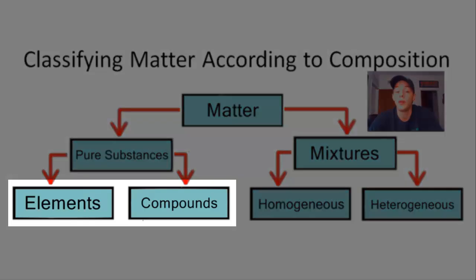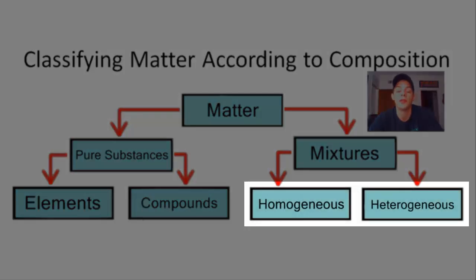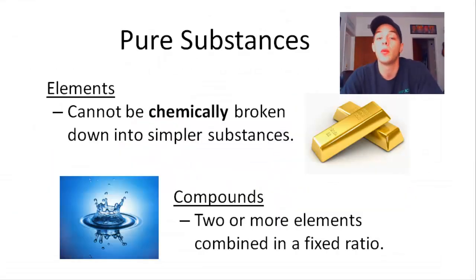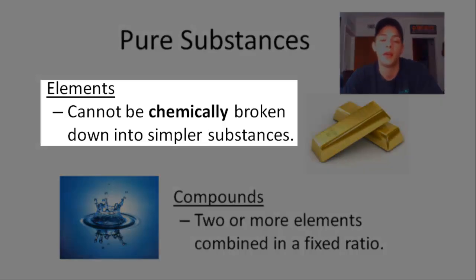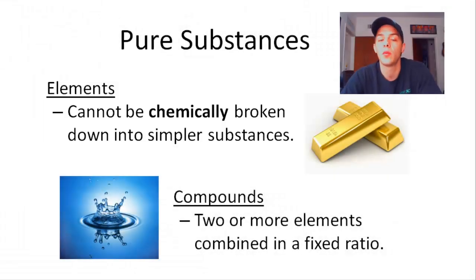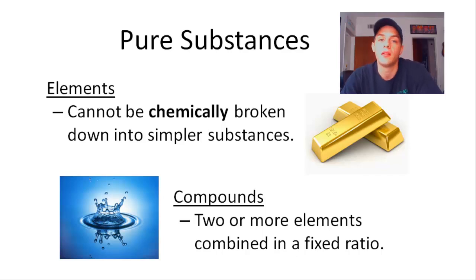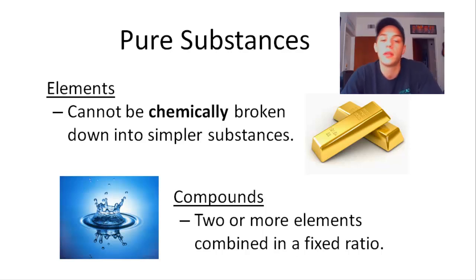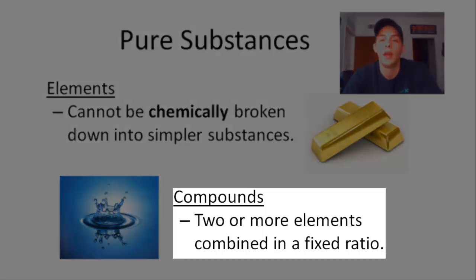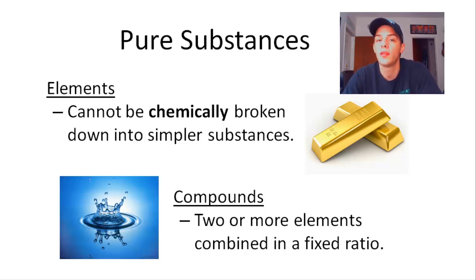Within pure substances we have elements and compounds, and within mixtures we have homogeneous and heterogeneous mixtures. An element is a substance which cannot be chemically broken down into simpler substances. I stress the word 'chemically' because in nuclear chemistry, elements can be broken down, but that is by nuclear reactions, not chemical ones. Gold is an example of an element. A compound is two or more elements combined in a fixed ratio — for example, water is composed of hydrogen and oxygen in a two-to-one ratio.